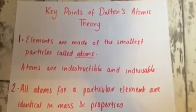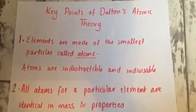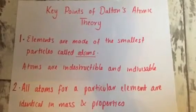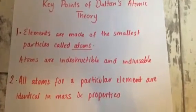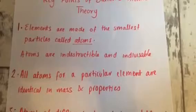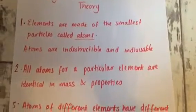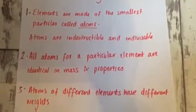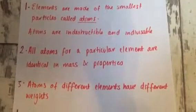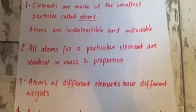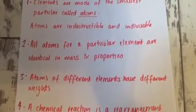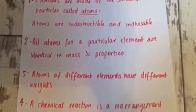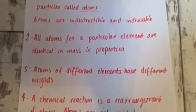Dalton's experiments into meteorology and the partial pressure of gases allowed him to come up with the key principles of his atomic theory. First, he suggested elements are made of the smallest particles called atoms, which are indestructible and indivisible — so they cannot be split.